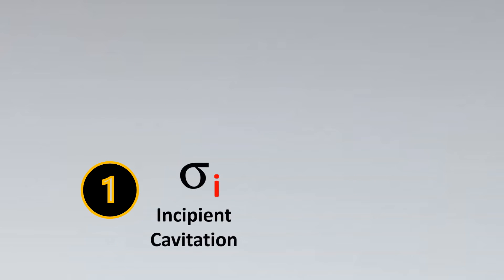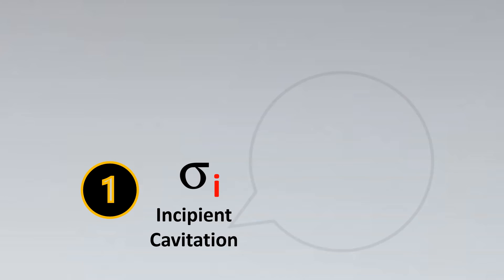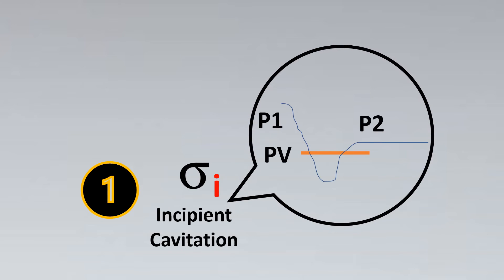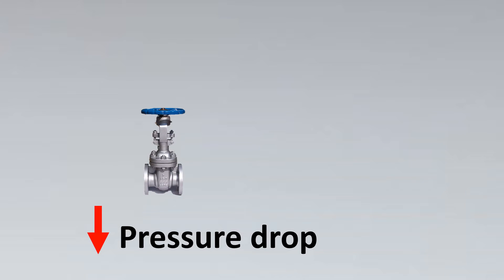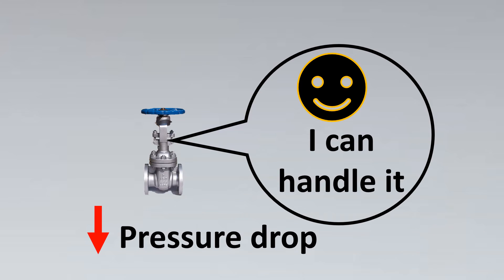The first one is incipient cavitation. The word incipient itself means start of something. This is the very start of cavitation. Because it's just the incipient stage, the pressure drop is very low for such cases, and the valve says that it can handle it. We don't need to have any special precautions for such a case.